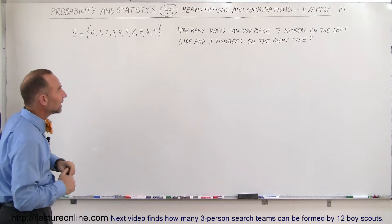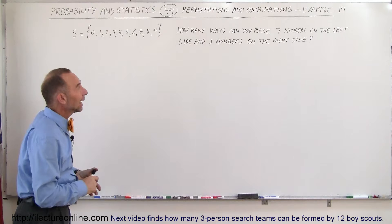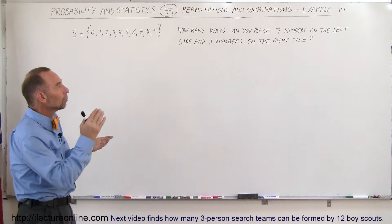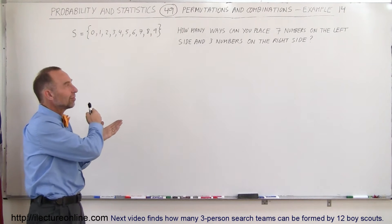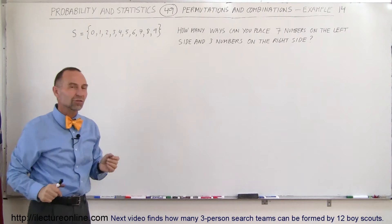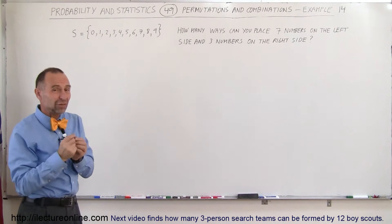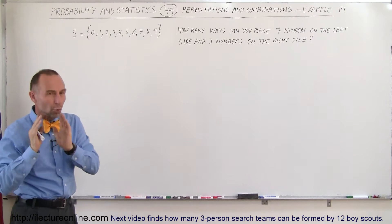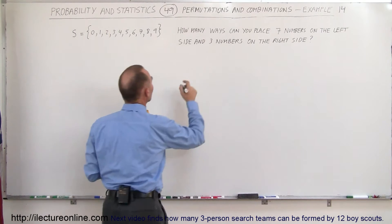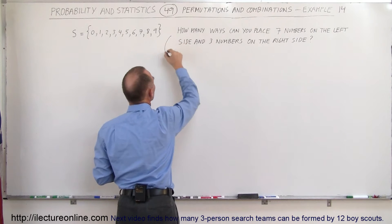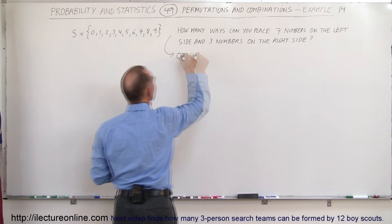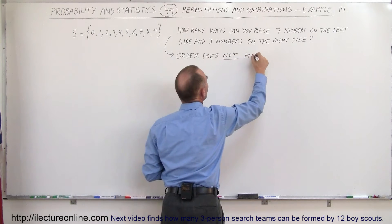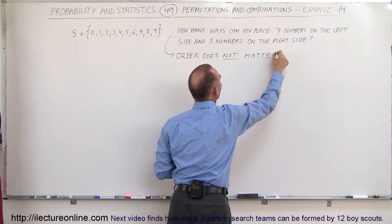So 0, 1, 2, 3, 4, 5, 6, 7, 8, 9 — those are 10 different numbers. We're trying to find how many ways we can place 7 of those numbers on one side and 3 on the other side. When phrased like this, asking for how many ways, they're looking for combinations, meaning order does not matter. So we determine that they're looking for the number of combinations.